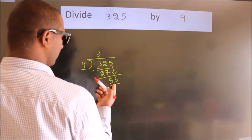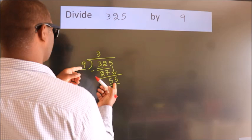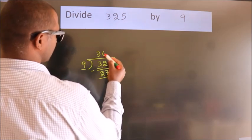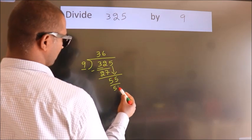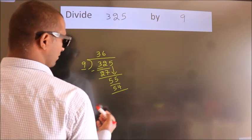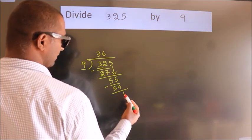A number close to 55 in the 9 table is 9 sixes, 54. Now we subtract. We get 1.